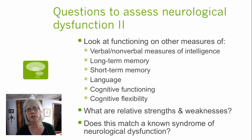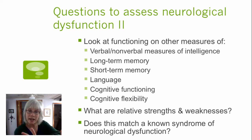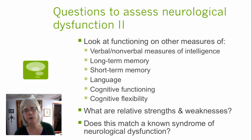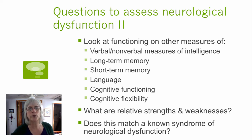He's going to look at her language use and her ability to respond to tasks in a flexible way — can she approach a task one way and then change it? He's going to think about her strengths and weaknesses. For example, he noticed that while she has some real weaknesses, she's still able to read. All of this information pulled together helps us understand any neurological dysfunction.